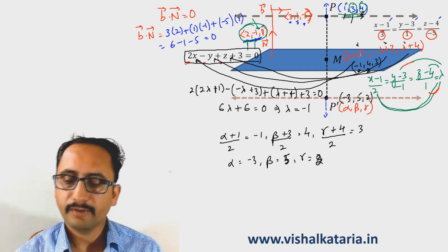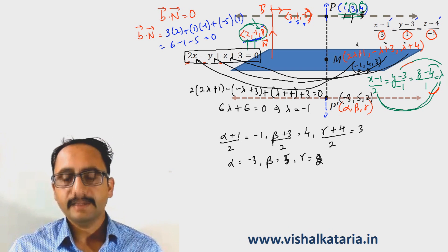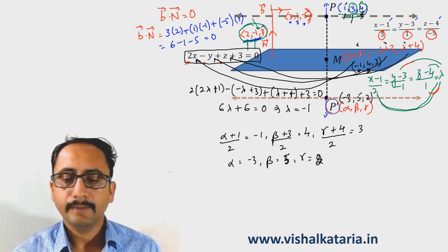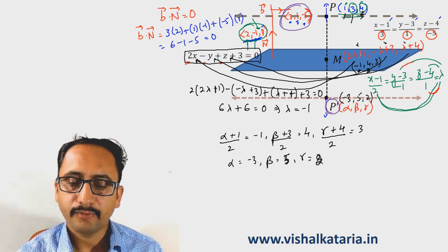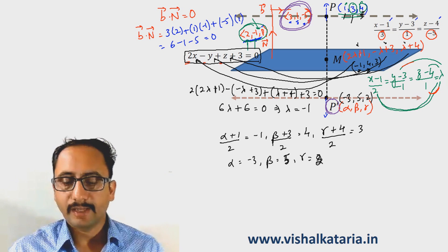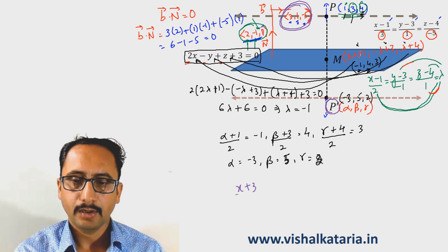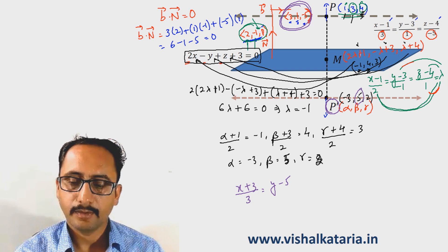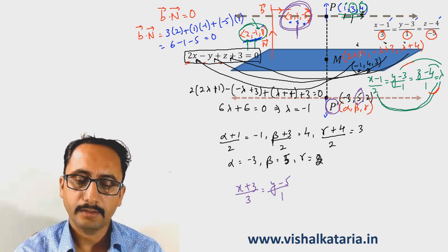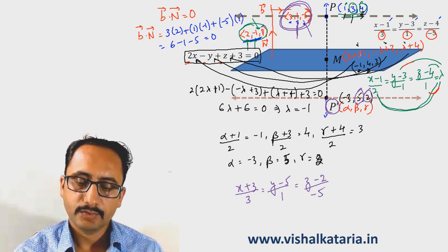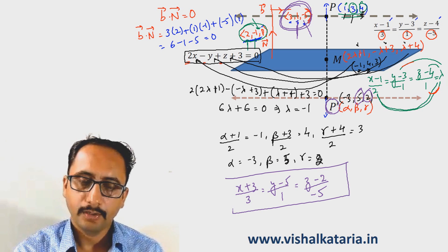The equation of the image of the line can easily be found because I know point P dash which lies on the line, and I know the DRs of a parallel vector to the image of the line. So the equation of the image of the given line is: (x + 3)/3 = (y − 5)/1 = (z − 2)/(−5). This is the equation of the required line.